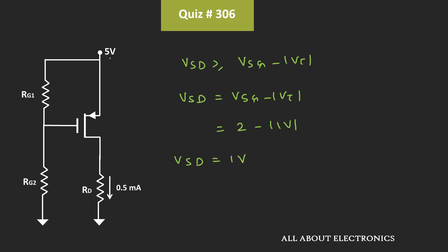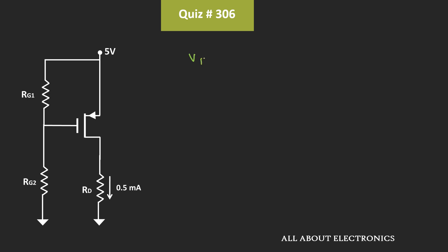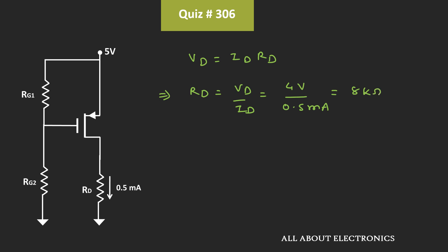The source voltage is 5V, so voltage VD equals VS minus VSD, which equals 4V. Whenever VD equals 4V, the MOSFET is at the edge of saturation. To get a drain voltage of 4V, we find Rd: VD equals Id times Rd, so Rd equals VD divided by Id, which is 4V divided by 0.5 mA, giving Rd equals 8 kΩ. Therefore, to maintain the MOSFET in saturation, the maximum value of Rd is 8 kΩ.